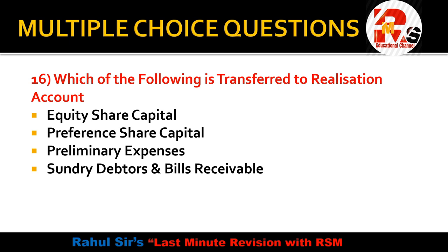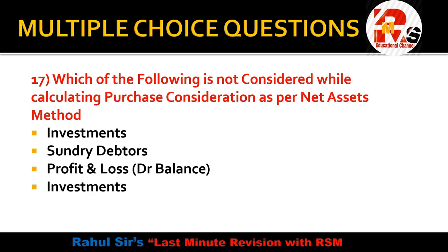Question 15 — which of the following is transferred to the realisation account? Options: equity share capital, preference share capital, preliminary expenses, sundry debtors and bills receivable. Equity share capital is transferred to equity shareholders' credit side; preference share capital to preference shareholders' credit side; preliminary expenses to the debit side of the equity shareholders ledger. Sundry debtors and bills receivable are transferred to the debit side of the realisation account. The correct answer is sundry debtors and bills receivable.